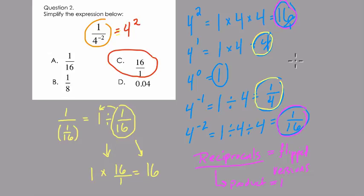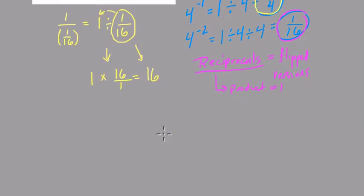The reverse is true, right? If 1 over 4 to the negative 2nd is 4 squared, you can also think, well, if I have 1 over 4 to the 2nd, that has to equal 4 to the negative 2nd. Because what you're always going to get here, same bases, opposite exponents. This is always going to work. There's a nice connection here. All right. Thanks.